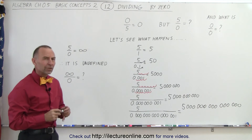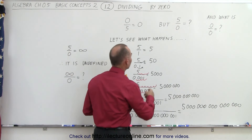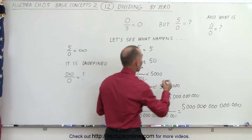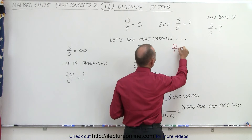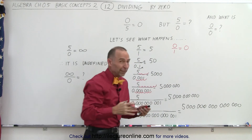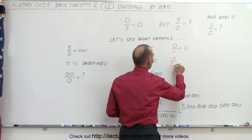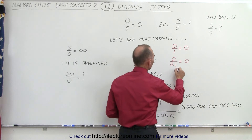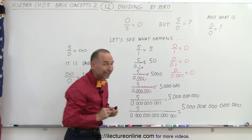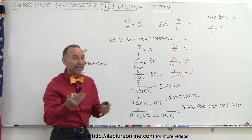What about zero divided by zero? Does that work the same way? We can do this again, but instead of dividing five by a small number, we're going to divide zero by a small number. Zero divided by one equals zero, because zero divided by any number is always going to be equal to zero. Zero divided by 0.1? Still equal to zero. Zero divided by 0.001? Still equal to zero. It doesn't matter how small we make the denominator — we always get zero when we divide zero by that very small number.